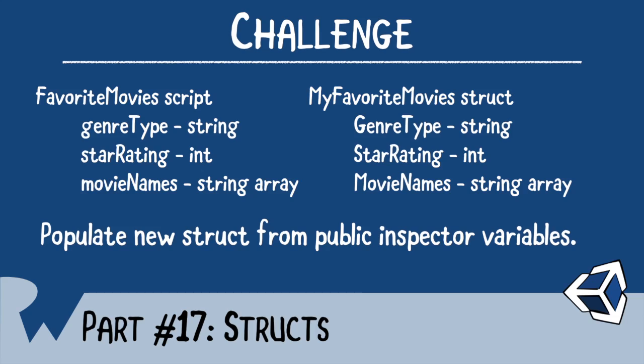That's it for this screencast, but as always, we like to end off with a challenge. In your challenge, I want you to create a new Unity script and call it Favorite Movies. In the script, I want you to have a few public variables: one should be a string for the genre type, one should be an int for the star rating, and the final should be a string array containing movie names. In onDisable, I want you to take that data and copy it into a struct called My Favorite Movies, and then print that data to the console from the struct itself. I hope you enjoyed this screencast — thanks again for watching, and I'll see you next time.